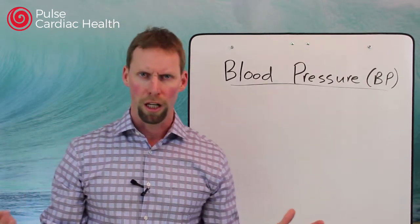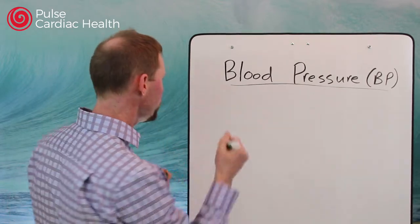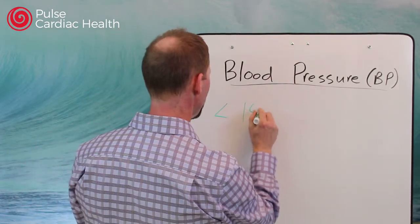What should your blood pressure be? If you are an otherwise healthy Canadian, you need to have a blood pressure less than 140 over 90.